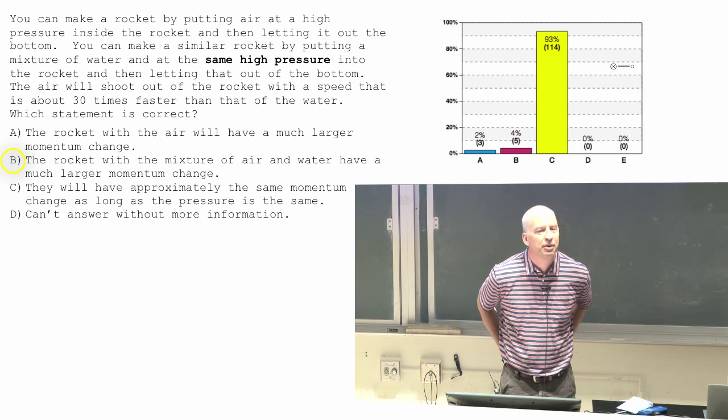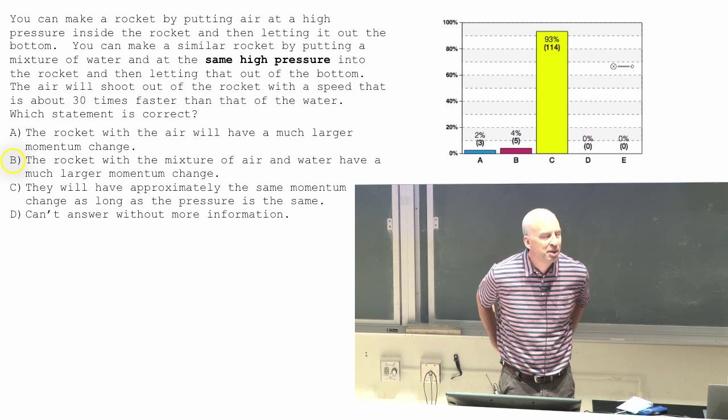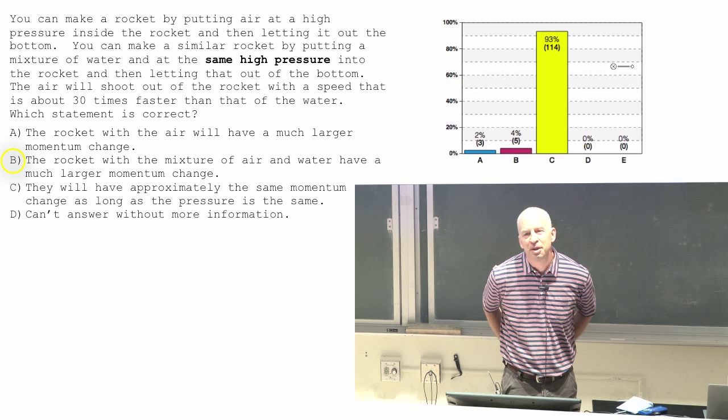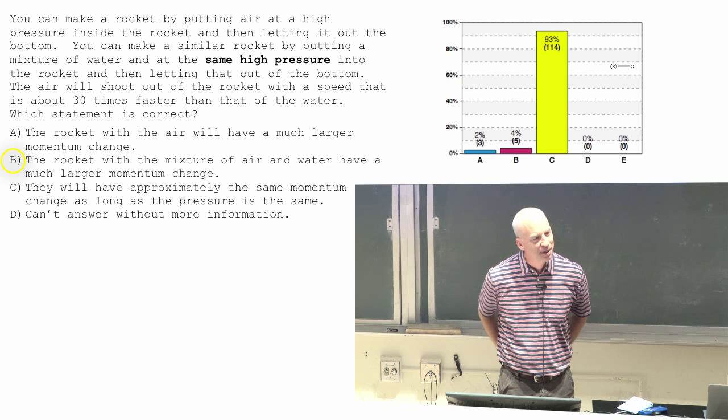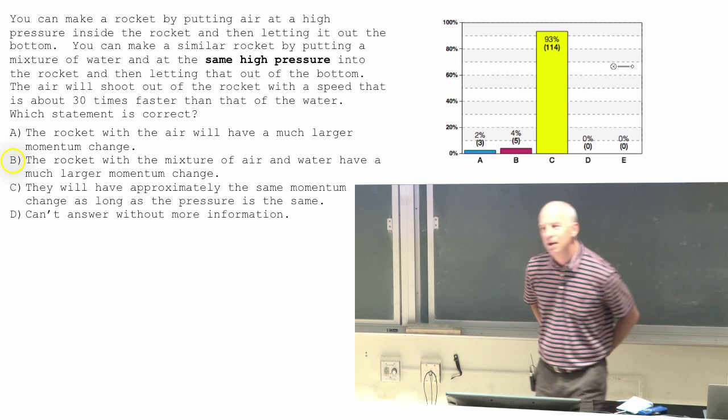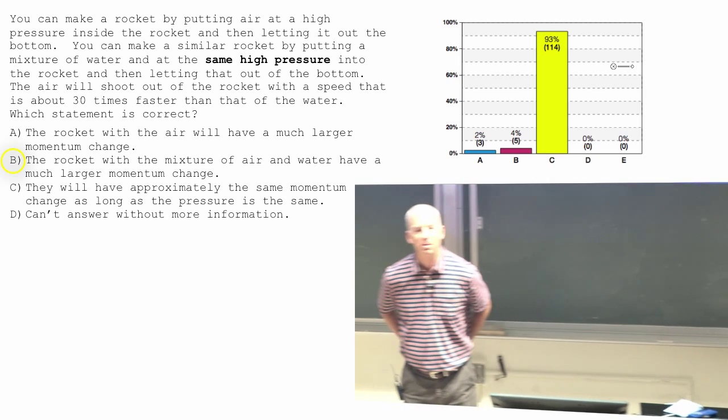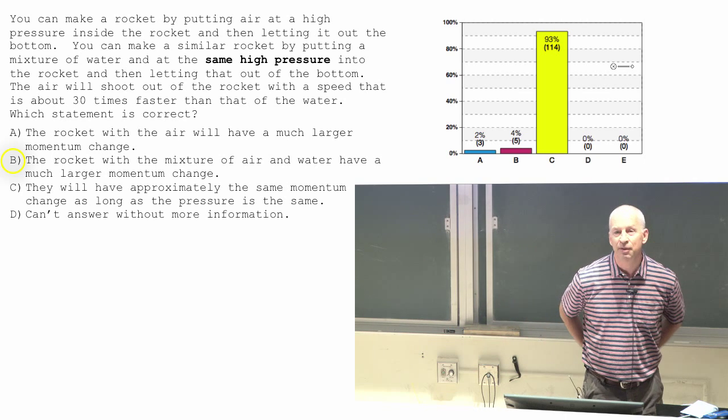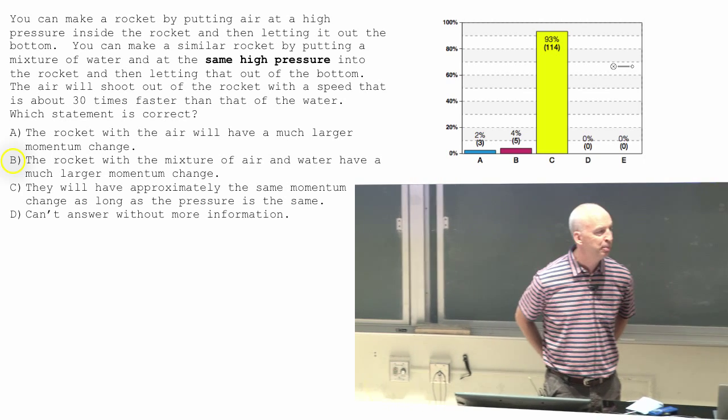Which one has the bigger mass? The water is about a thousand times denser than the air. About a thousand times. So even though the speed is 30 times higher, if the water's a thousand times denser, then the momentum change of the water is about 30 times bigger.